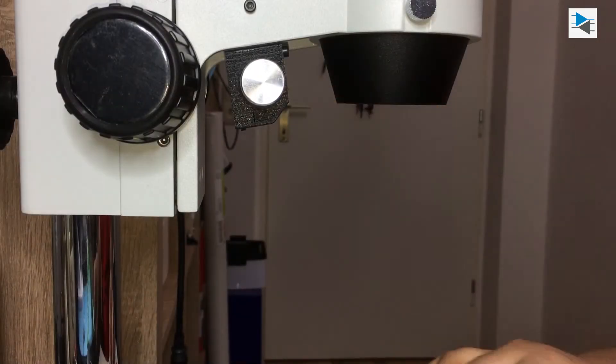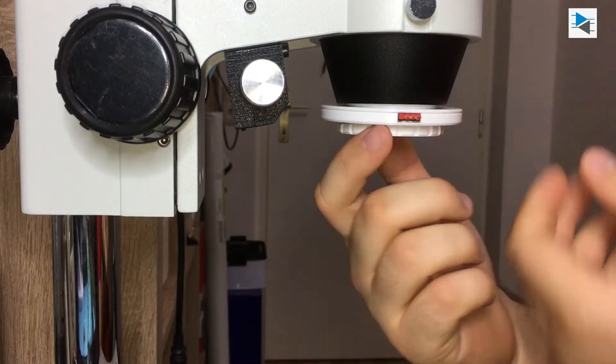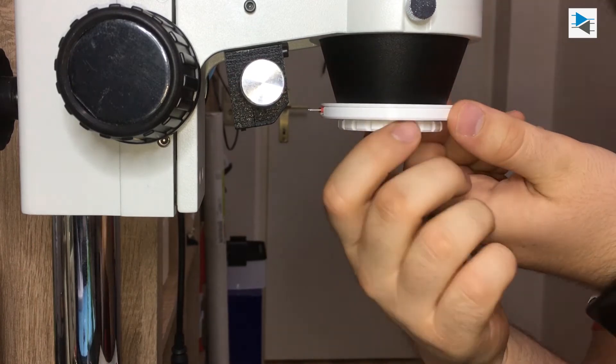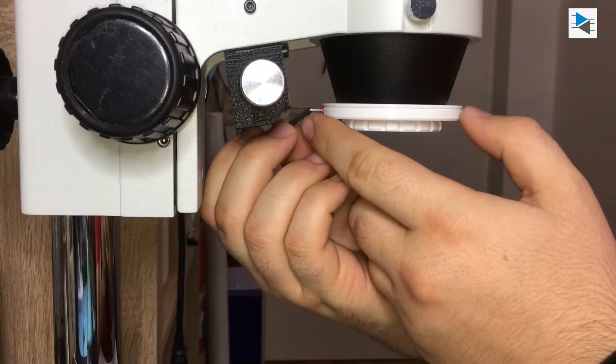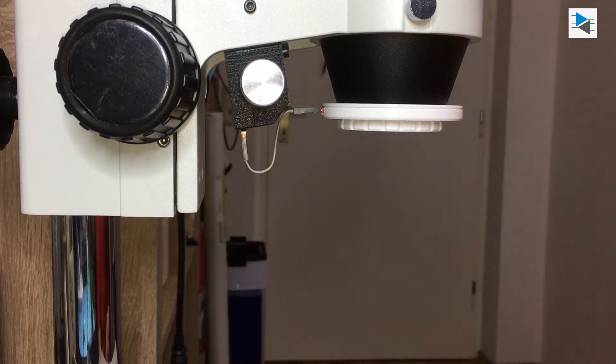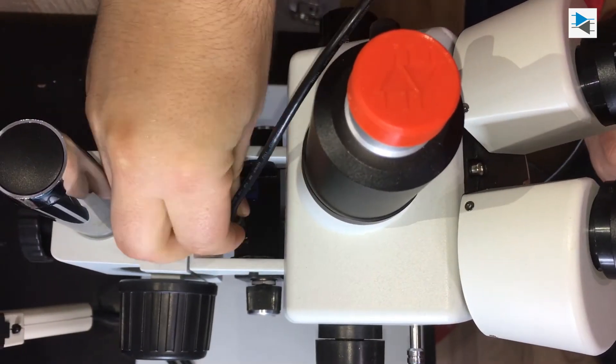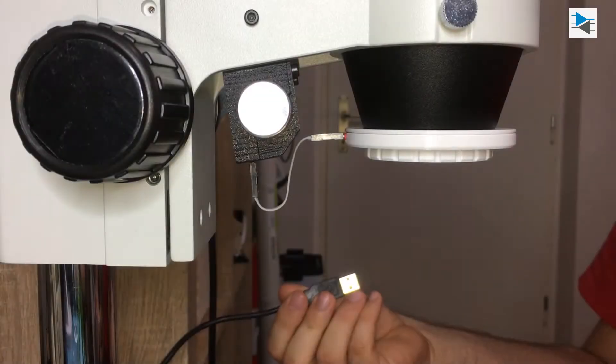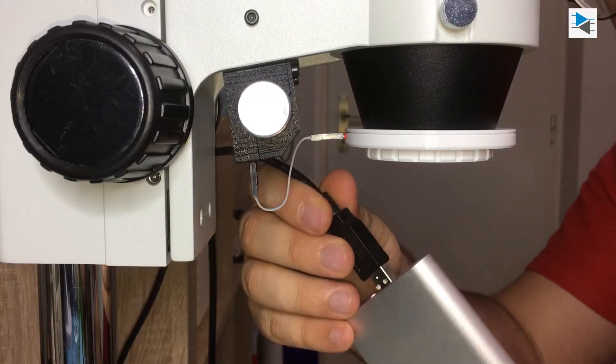Next, the ring light assembly is screwed onto the microscope using the lens cap thread. After that, it's only a matter of connecting the NeoPixel clone to the control unit, plugging in a mini USB lead, and connecting it to either a standard USB charger or in this case a power bank.